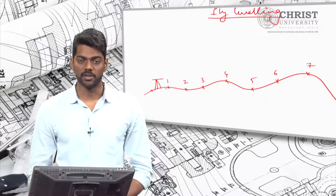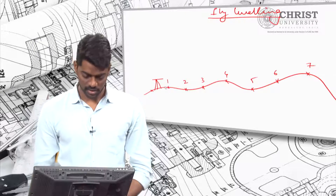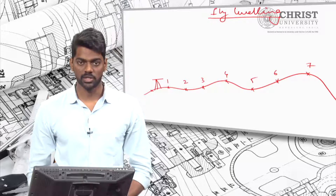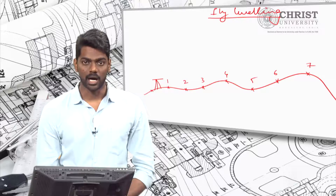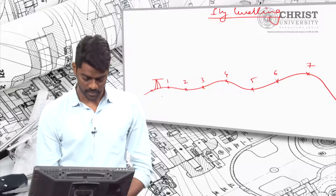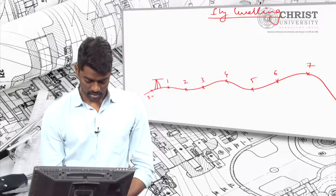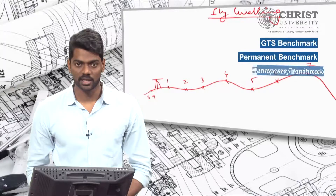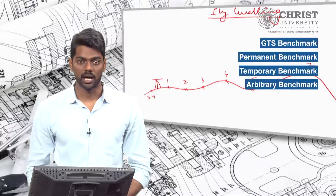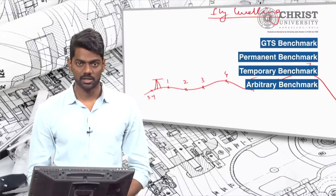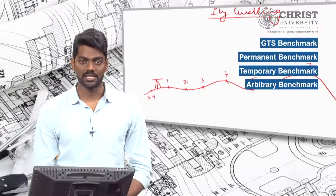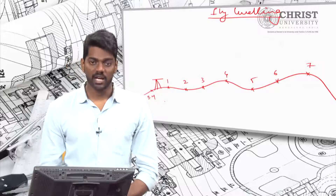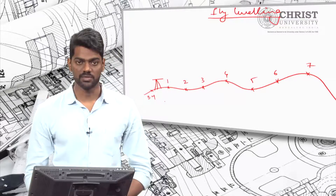If I want to determine the reduced level of point one, the first thing we should know is the RL of a known point. Since this is an unknown terrain surface, we don't know the exact value of a known point. For that, we are considering a point which we call an arbitrary benchmark. As we know, we have four different types of benchmarks: the first is a GTS benchmark, second is a permanent benchmark, third is a temporary benchmark, and fourth is an arbitrary benchmark. The benchmark we consider for this terrain is an arbitrary value — not the actual value from mean sea level.